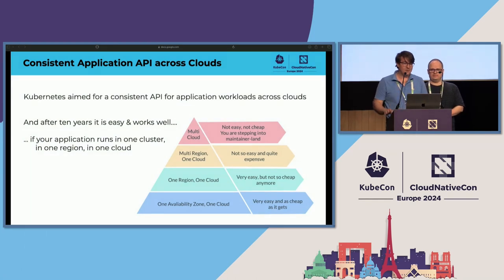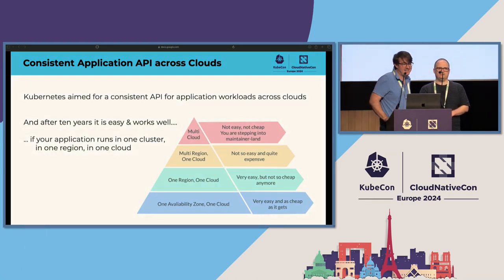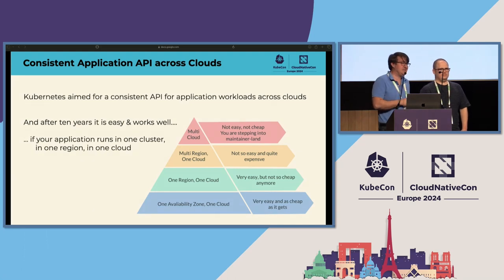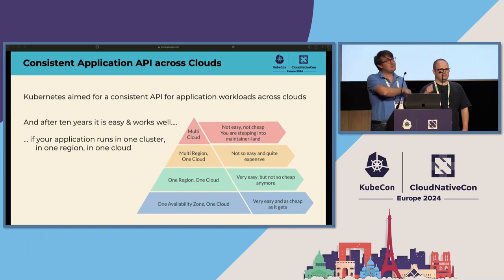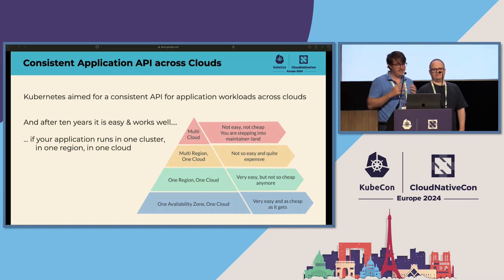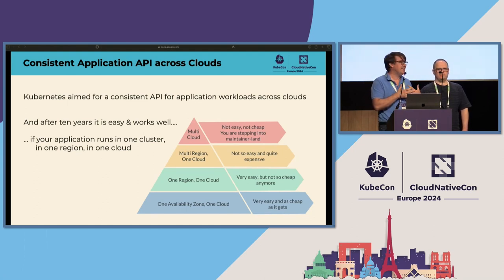One of the things we're celebrating this year at KubeCon is 10 years of Kubernetes. From the very start, Kubernetes set out to give application portability — you should be able to take a working application on a Kubernetes cluster in Cloud A and run that same YAML on Cloud B. Ten years in, we've basically achieved that, though there are still some rough edges.